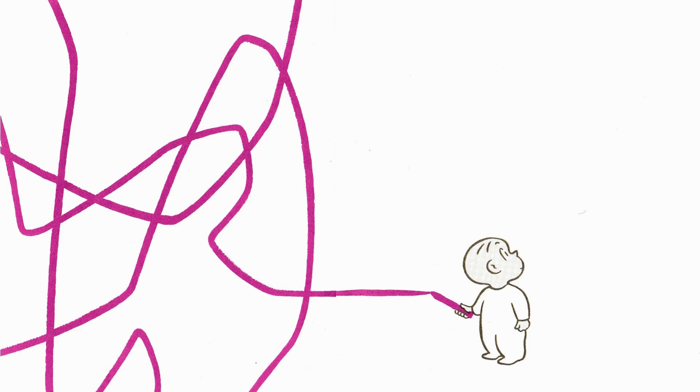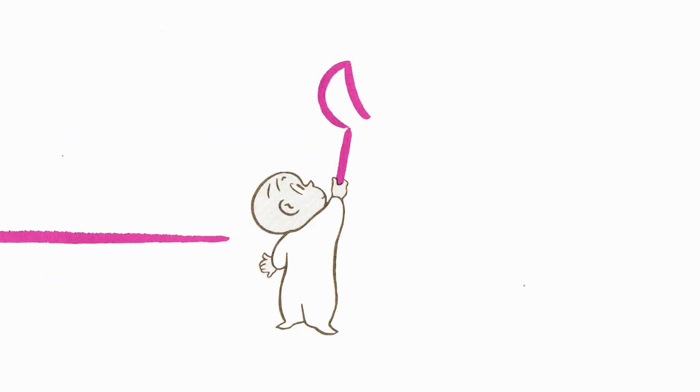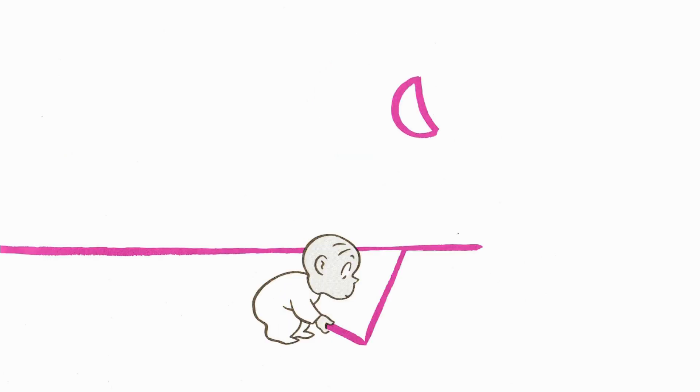One evening, after thinking it over for some time, Harold decided to go for a walk in the moonlight. There wasn't any moon, and Harold needed a moon for a walk in the moonlight. And he needed something to walk on.